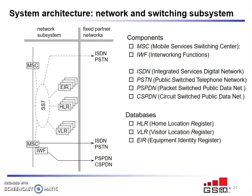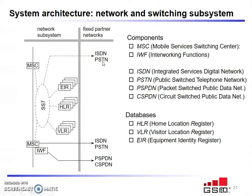Moving into the network and switching subsystem: the MSC communicates with ISDN and PSTN with the help of inter-working functions. ISDN stands for Integrated Services Digital Network, PSTN for Public Switched Telephone Network. We also have PSPDN (Packet Switched Public Data Network) and CSPDN (Circuit Switched Public Data Network). The databases available are HLR, VLR, and EIR — Visitor Location Register, Home Location Register, and Equipment Identity Register.